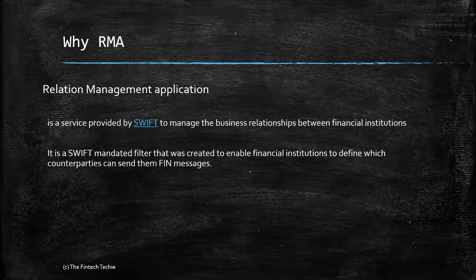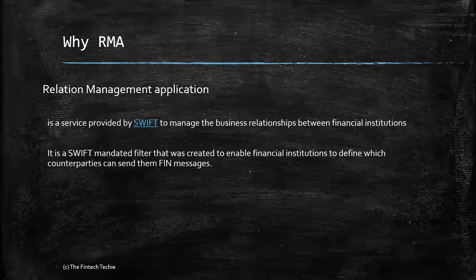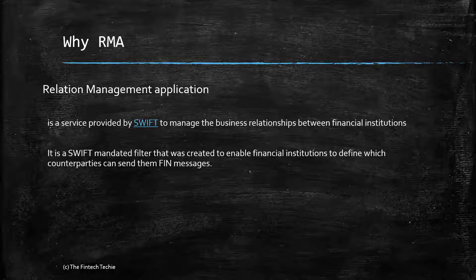Let's try to understand this in a very simple way by taking the analogy of a mobile phone. We all know that we get a lot of unwanted calls on our phones. So what do we do? We block unwanted numbers so that we can ensure that spam calls don't disturb us. Similarly, in Swift, we have the mechanism to block unwanted Swift messages. The only difference being that on the cell phone we block what we don't want, whereas in the context of Swift, we actually allow what we want.